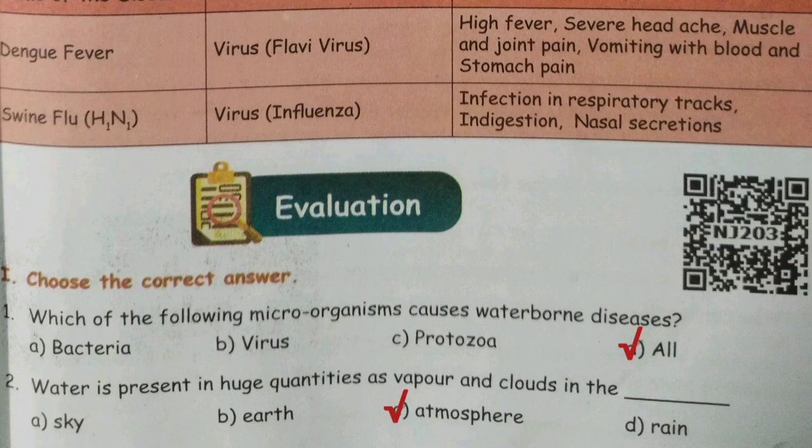Second one: water is present in huge quantities as vapour and clouds in the dash. Answer: option C, Atmosphere.